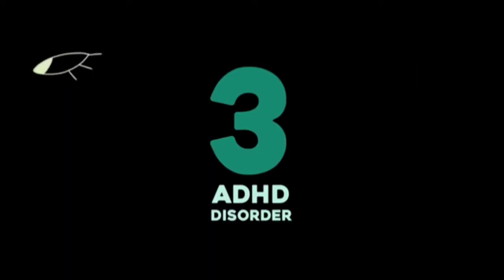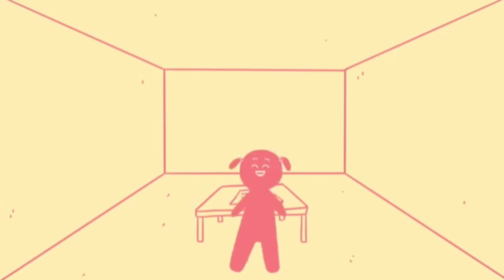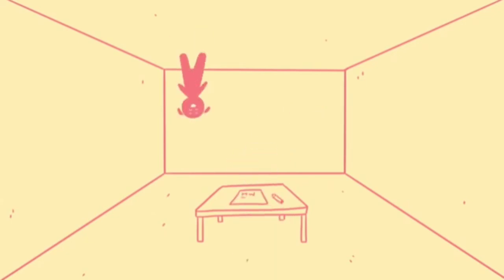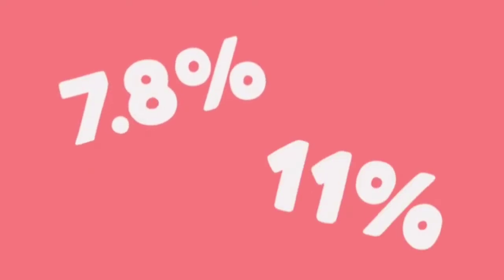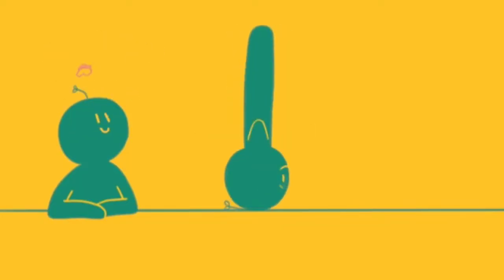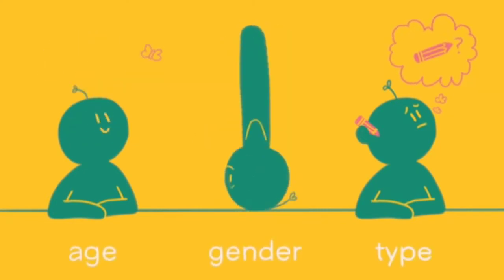Three: Attention Deficit Hyperactivity Disorder. If we say ADHD, what comes to mind? The stereotype of a person diagnosed with ADHD is usually a small child who's bouncing off the walls or can't finish a task. However, between 7.8 and 11% of children aged 4 to 17 are diagnosed with ADHD any given year. ADHD affects people of all ages and includes multiple symptoms, such as inability to concentrate, forgetfulness, inability to sit still, restlessness, and losing things. An individual's symptoms vary depending on their age, gender, and type of ADHD.